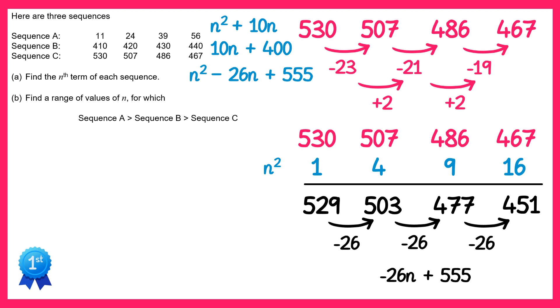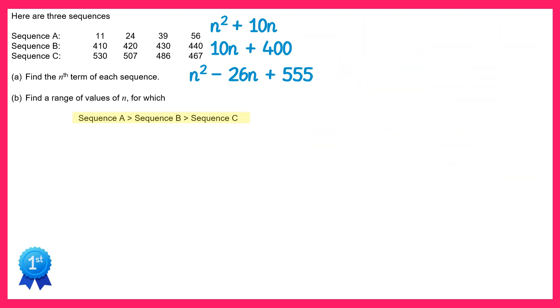Now we can move on to part B of the question. We're told that sequence A is greater than sequence B, and this is greater than sequence C. If we write that down algebraically, we can use the nth terms to say n squared plus 10n is greater than 10n plus 400, which is greater than n squared minus 26n plus 555.